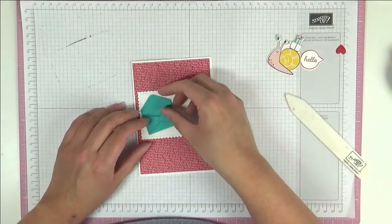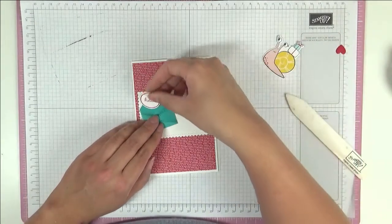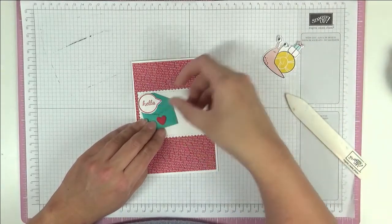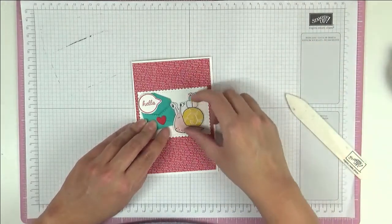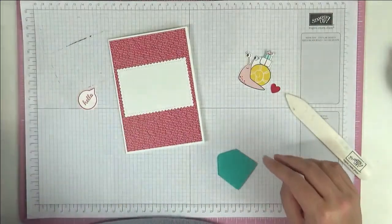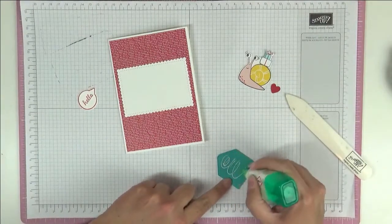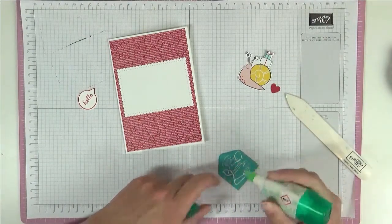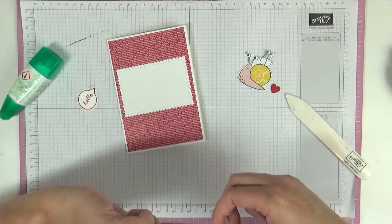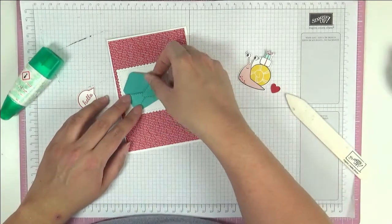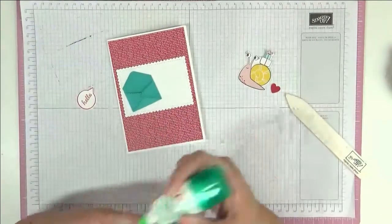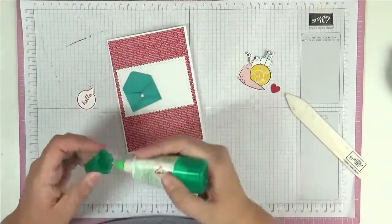Lovely so now we can start to get our placement. We're going to have a hello here, a little heart here, a little heart here and then a snail like that so that seems fine. So let's stick down our envelope and I'm going to use just some Tombow for this and just going to put that down something like that.